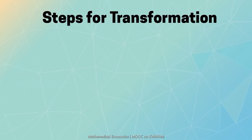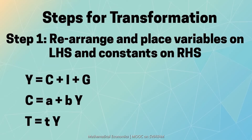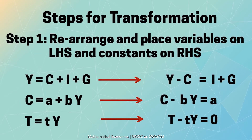In the first step, we rearrange the variables on the left-hand side and constants on the right-hand side. Y, C and T are the variables in the system and hence arranged on the left-hand side, and I plus G and A are constants and arranged on the right-hand side.